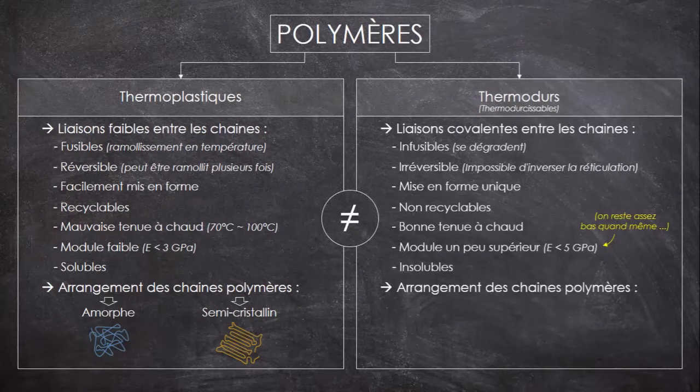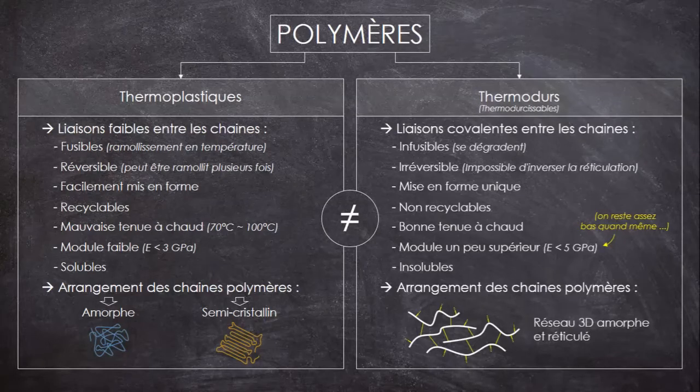Pour la structure, ils sont systématiquement amorphes, puisqu'en fait les chaînes sont bloquées par les réticulations et ne peuvent pas se serrer. Un point intéressant qui découle de leur structure, c'est que si les thermoplastiques sont finalement constitués de milliards et de milliards de macromolécules, eh bien un thermodur, quelle que soit sa taille, n'est constitué que d'une seule et même gigantesque molécule.